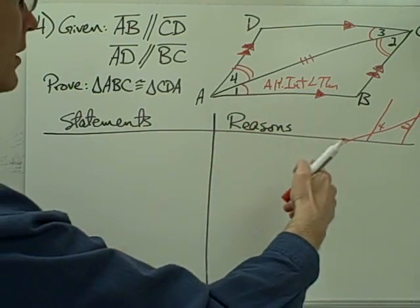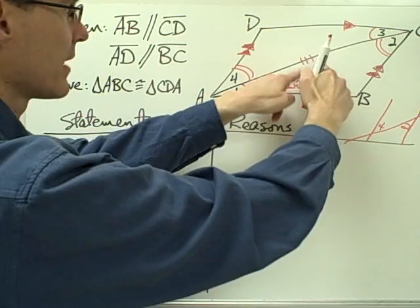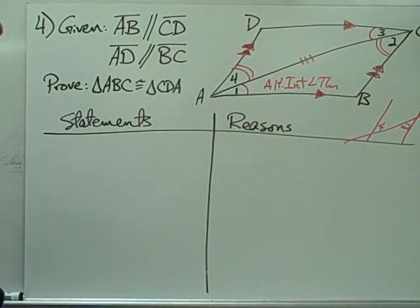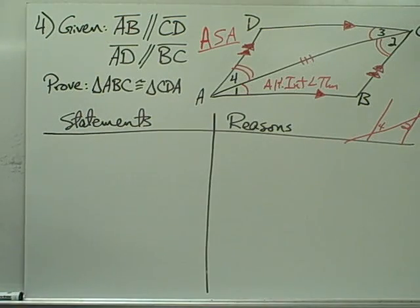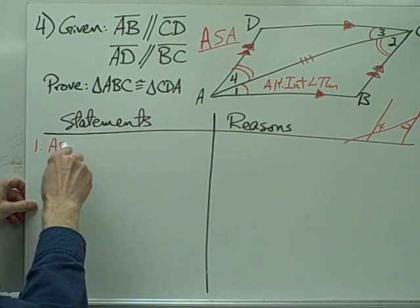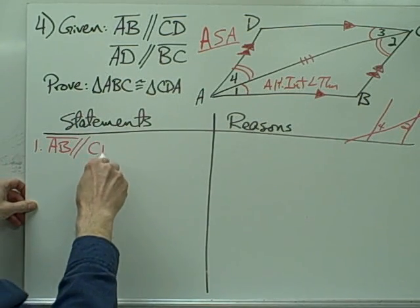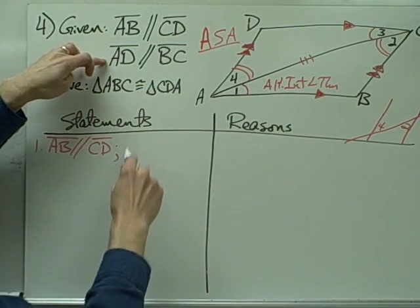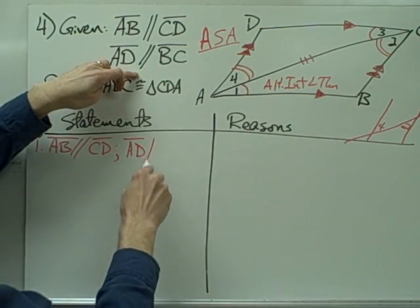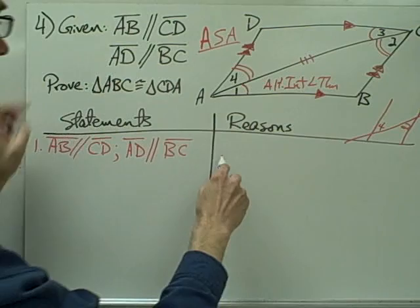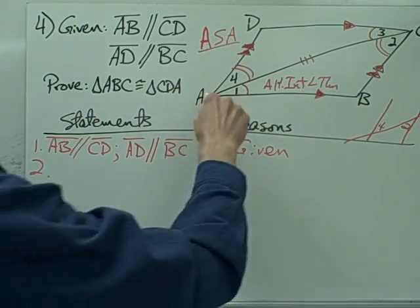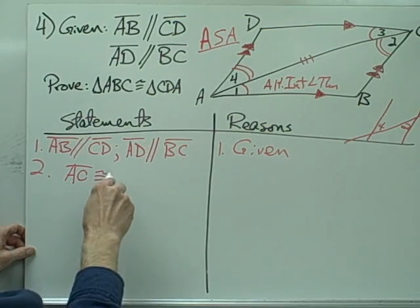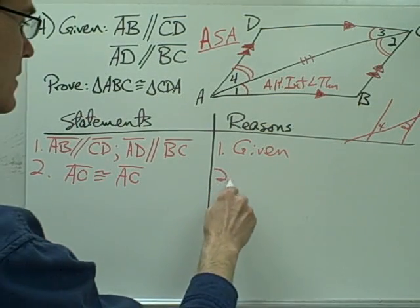So now I have two angles and the included side of one triangle congruent to two angles and the included side of a second triangle — I'm going to be using my angle-side-angle postulate. Let's write down all of our information here leading up to the angle-side-angle postulate. Segment AB is parallel to segment CD, and AD is also parallel to segment BC — that's given. Segment AC is congruent to segment AC — that's the reflexive property.